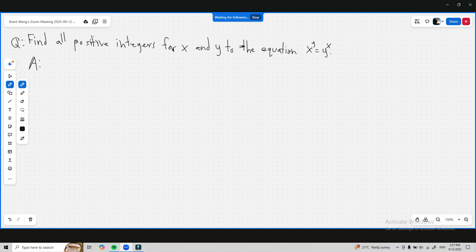I was struggling to solve since 2013 this question: find all positive integers for x and y to the equation x to the power of y equals y to the power of x.